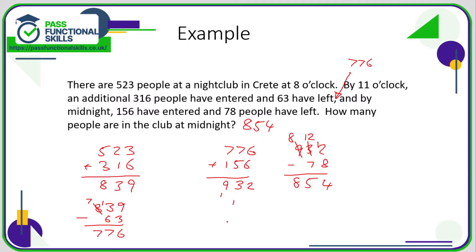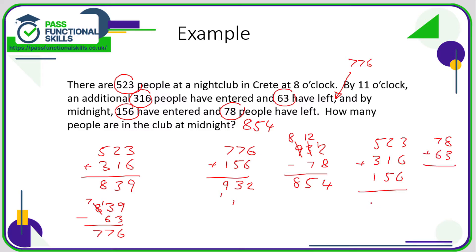Alternatively, what you could have done is simply add 523 plus 316 plus 156, and then work out how many people in total left — 78 plus 63 — as two separate calculations. Then subtract the total exits from the total entries. 6 plus 6 is 12, plus 3 is 15; 5 carry 1; 2 plus 1 is 3, plus 5 is 8, plus 1 is 9; 5 plus 3 is 8, plus 1 is 9. Now for the total number of people leaving: 8 plus 3 is 11, carry 1; 7 plus 6 is 13, plus 1 is 14.